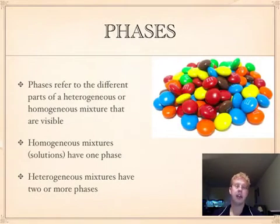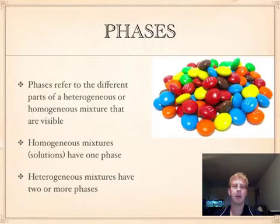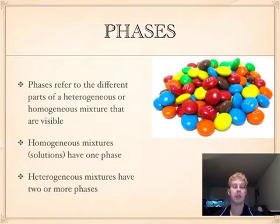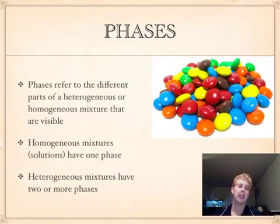When we talk about heterogeneous and homogeneous solutions or mixtures, we also need to talk about phases. Phases refer to the different parts of a heterogeneous or homogeneous mixture that are visible. For example, in this picture of M&Ms, I have red, yellow, blue, orange, green, and brown — each of those is a different phase, and we can see that they're separate from the other M&Ms. A homogeneous mixture will only have one phase, because it looks the same throughout. A heterogeneous mixture is going to have two or more phases.